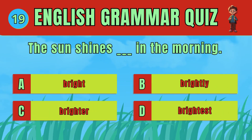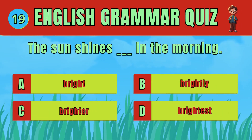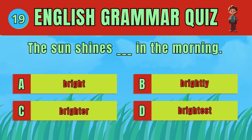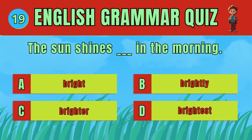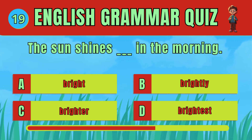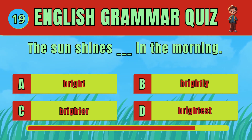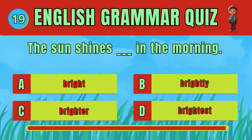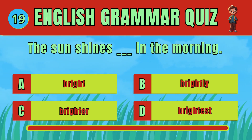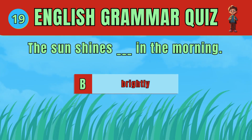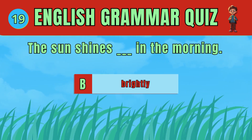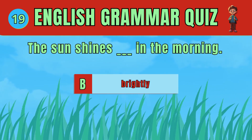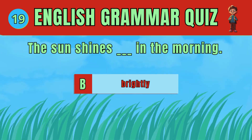Choose the correct adverb to describe how the sun shines. The answer is: brightly. The sun shines brightly in the morning.